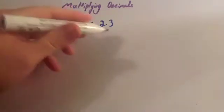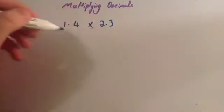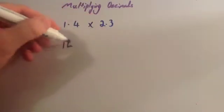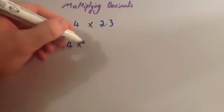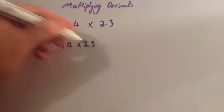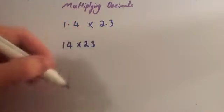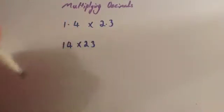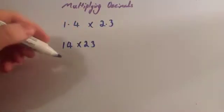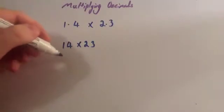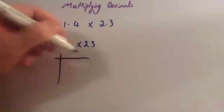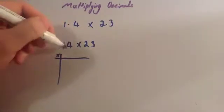So the first step is to ignore the decimal points. So we would have 14 times 23. The method I recommend for multiplying these two numbers together is the grid method — watch the video on multiplication if you want a reminder of how to do that. So we're going to times them together.